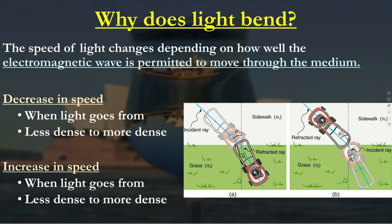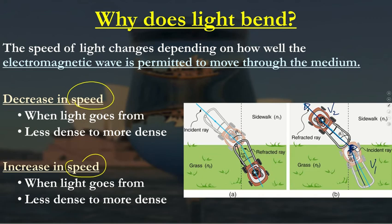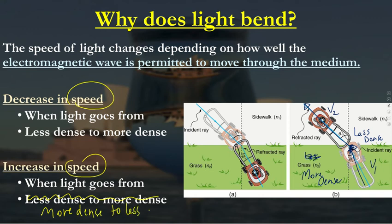Why is this happening? It all has to do with speed. If the speed of light going from one medium to another is increasing — which occurs going from a more dense to a less dense medium — v2 has a higher velocity than v1. Going from more dense to less dense will increase the speed, and that's why it bends away from the normal.